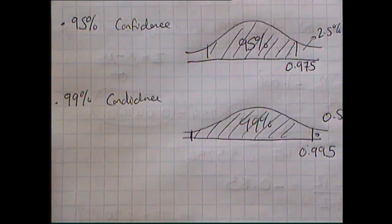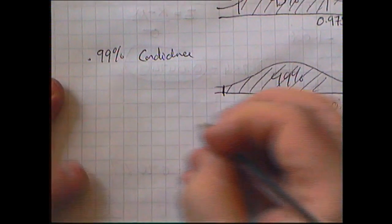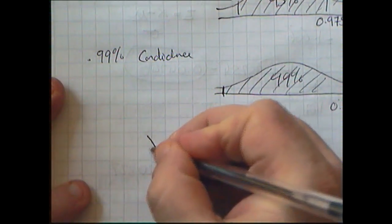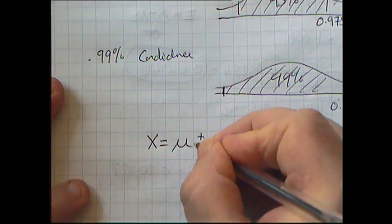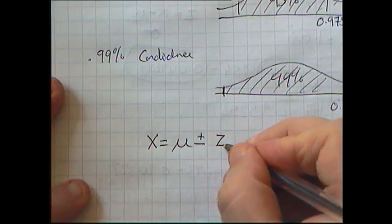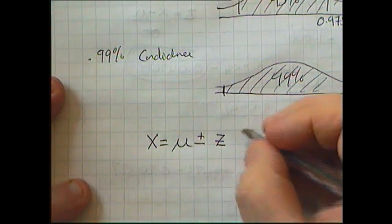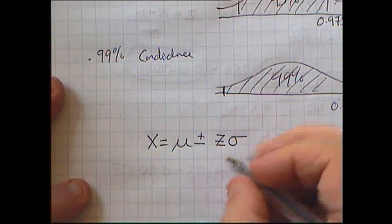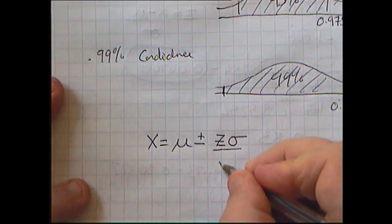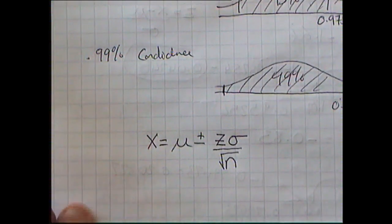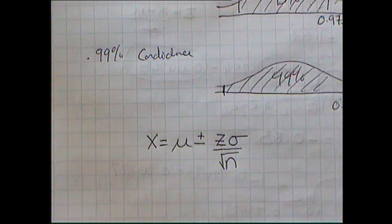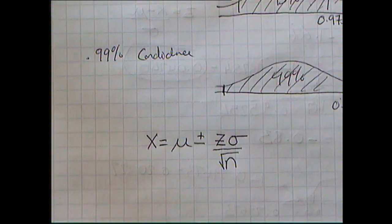The formula I'm going to use to find my actual values is: mean plus or minus the z value (calculated using the table), times my standard deviation, all divided by the square root of how many things are in my sample. That's the basic formula we're going to use.